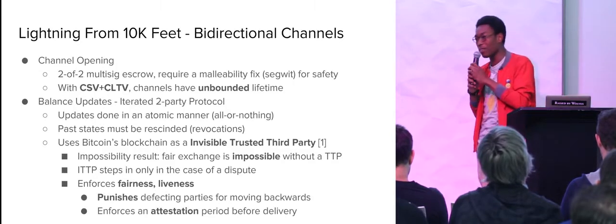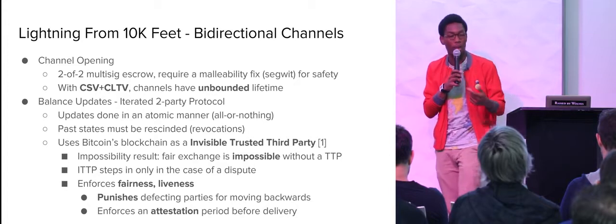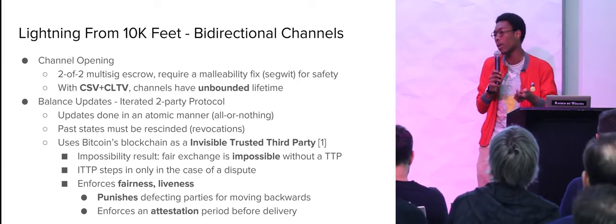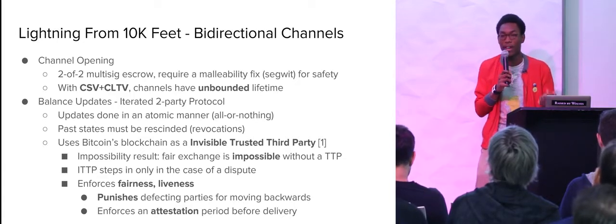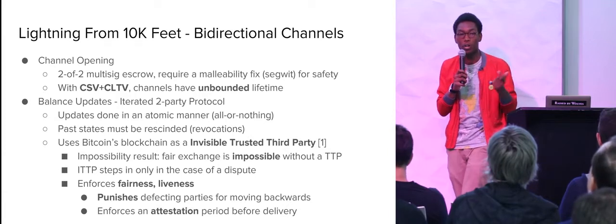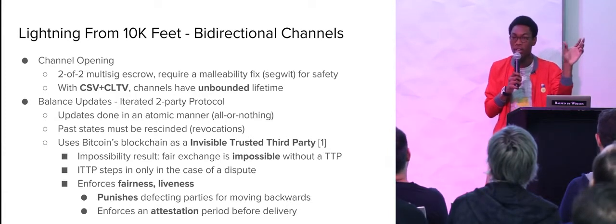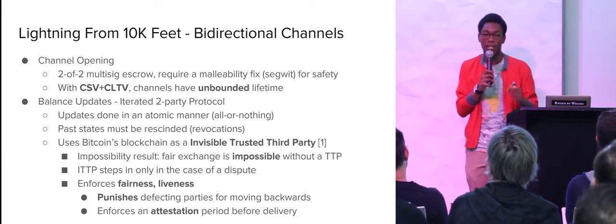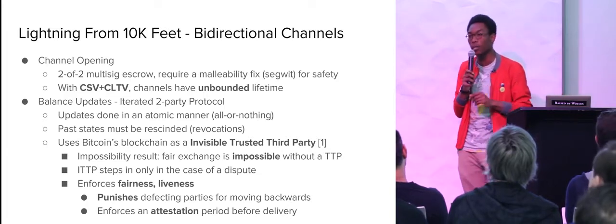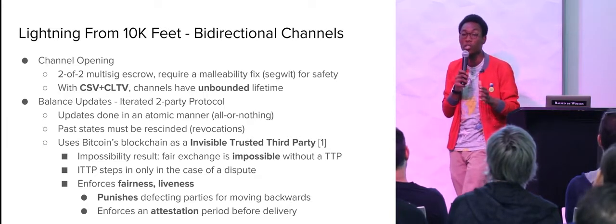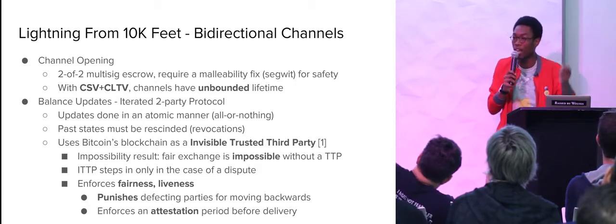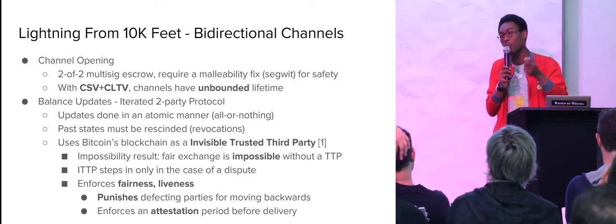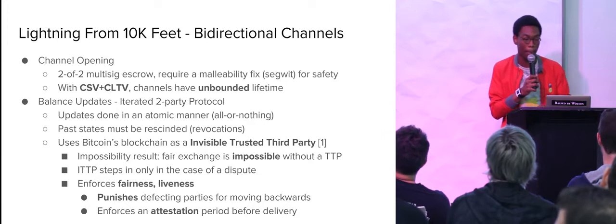Lightning from 10,000 feet: bi-directional channels. Initially with a regular payment channel, you have a two-of-two multisig escrow where Alice and Bob each put in Bitcoin. In order to do this protocol safely, because we have nested transactions with the funding transaction and the commitment transaction, we require some sort of malleability fix. The one we currently use is SegWit, or Segregated Witness. Without this fix, Bob could malleate the transaction and hold Alice's funds hostage, essentially demanding more money.